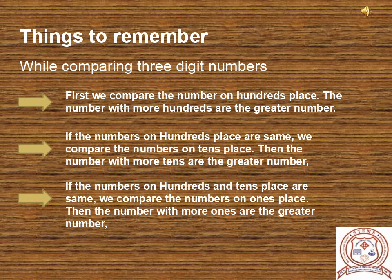Now we will see how to compare three-digit numbers. While comparing three-digit numbers, keep in mind these three points. First, we compare the number on the hundreds place — the number with more hundreds is the greater number. Second, if the numbers on hundreds place are same, we compare the numbers on tens place — the number with more tens is the greater number. Third, if hundreds and tens are same, we compare the numbers on ones place — the number with more ones is the greater number.